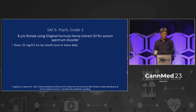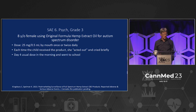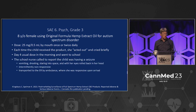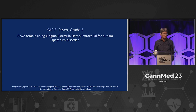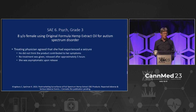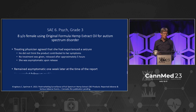Another psych SAE: eight-year-old female using original formula hemp extract oil for autism spectrum disorder, 25 milligrams by mouth once to twice daily. Each time the child received the product, she acted out and cried briefly. Day four: usual dose in the morning and went to school. The school nurse called to report the child was having a seizure — vomiting, drooling, staring into space, eyes rolled back. Intermittently non-responsive, transported to the ER by ambulance where she was responsive upon arrival. The treating physician agreed she experienced a seizure but did not think the product contributed to her symptoms. No treatment was given; she was released after approximately five hours, asymptomatic upon release, and remained asymptomatic one week later.